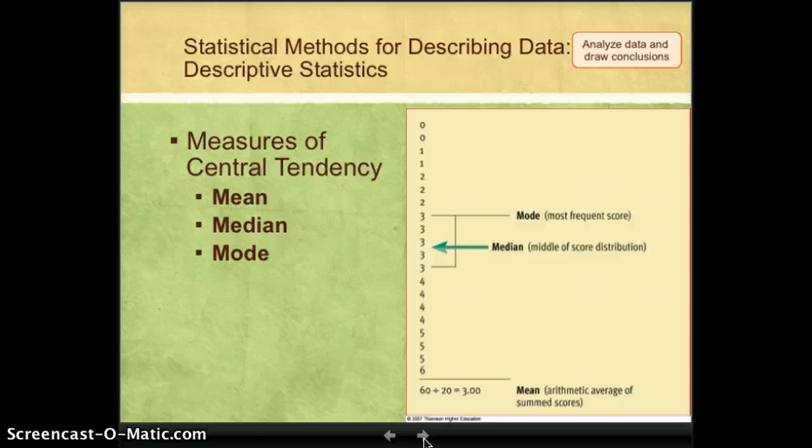But in the world of statistics, there are actually three different types of middle scores, or what we call measures of central tendency. These are ones you've learned about since probably the fifth grade. These are mean, median, and mode.